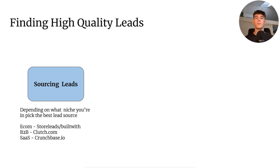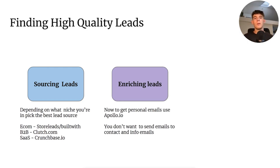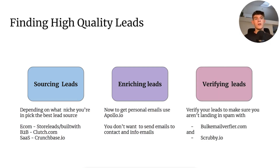If you're in the SaaS space, you can go to Crunchbase.io — that has a great bunch of different SaaS companies. Now, enriching the leads will give you the personal emails of these companies. You'll go to Apollo to get the personal emails by enriching the leads you've gotten from Store Leads or Build With, because you don't want to send emails to contact or info emails — you need personal emails. Finally, verify your leads using Bulk Email Verifier and Scrubby.io to make sure every single lead you're sending to is verified and good to go.